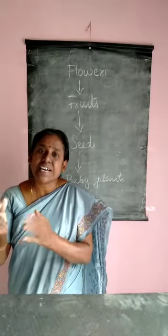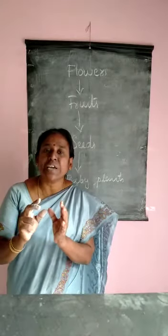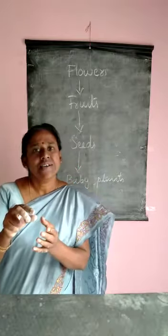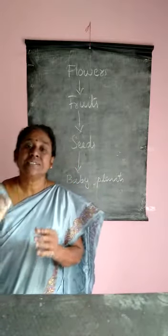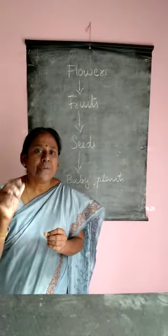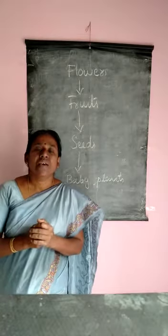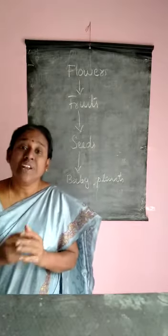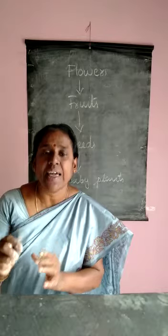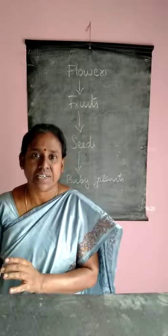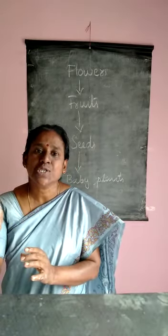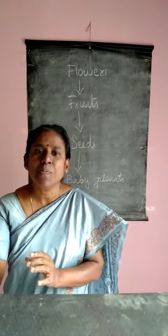Seeds are protected by fruits. Inside the fruits there are seeds. Seeds have baby plants. When a seed gets sufficient sunlight, air, and water, it grows into a small plant.